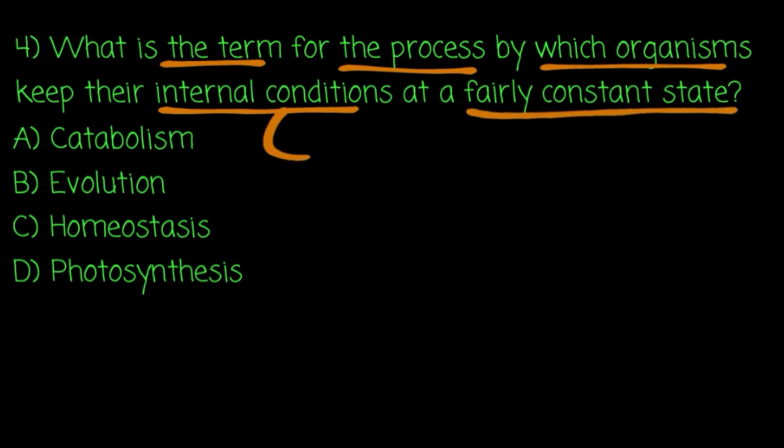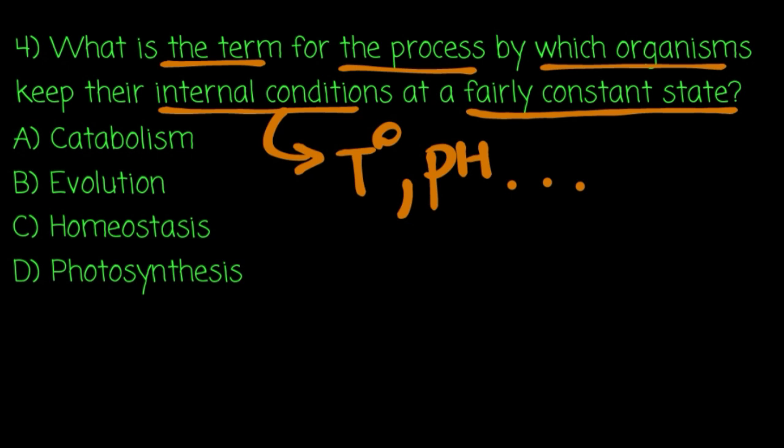So, internal conditions such as temperature, pH, salt content, and water content — organisms keep all of these constant. The process that keeps organisms' internal environment stable is called homeostasis.